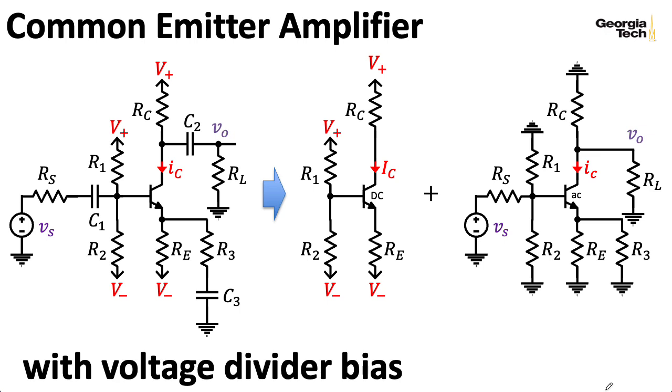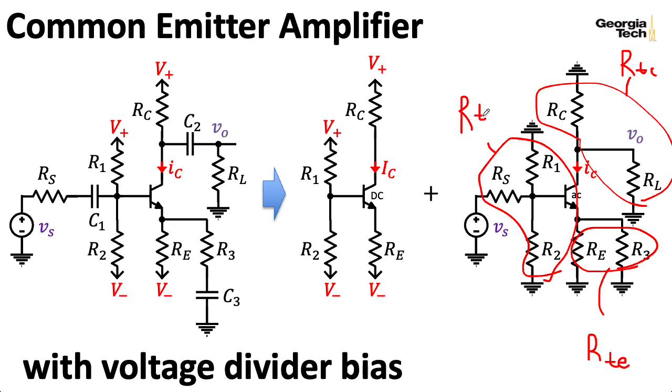Now, to try to keep the remaining exposition compact, I'm going to basically replace everything looking out of every terminal with the Thevenin equivalent. So I'm going to take RC and RL and write that parallel combination as RTC. I'm going to take RE and R3 and write that parallel combination as RTE. And then the parallel combination of R1, R2, and RS going to ground, that's going to be written as RTB. And then I'm also going to take this voltage source out here and replace it with the Thevenin equivalent VTB according to a voltage divider rule. And we've done that a dozen times already. So I won't belabor the details here.